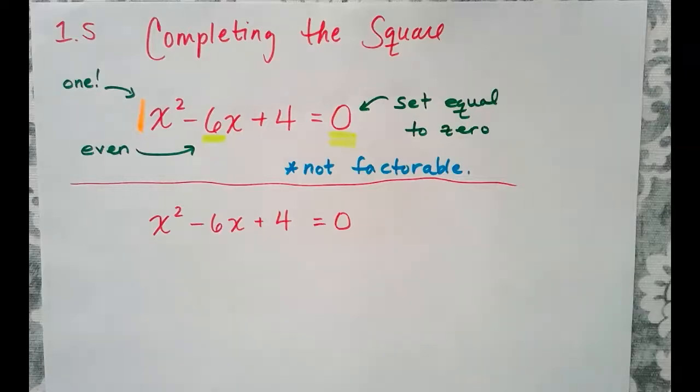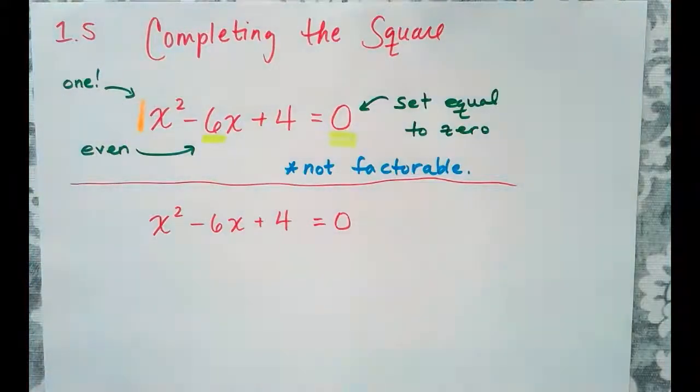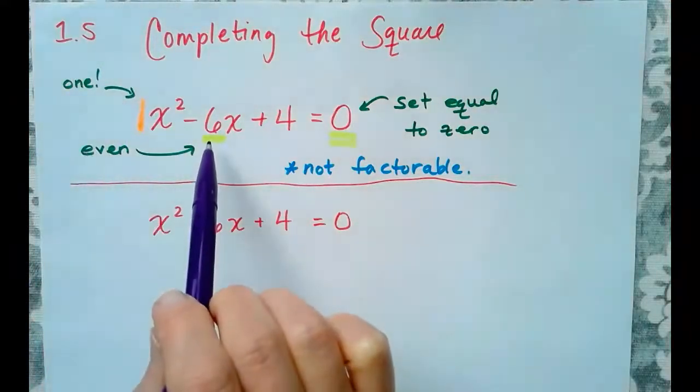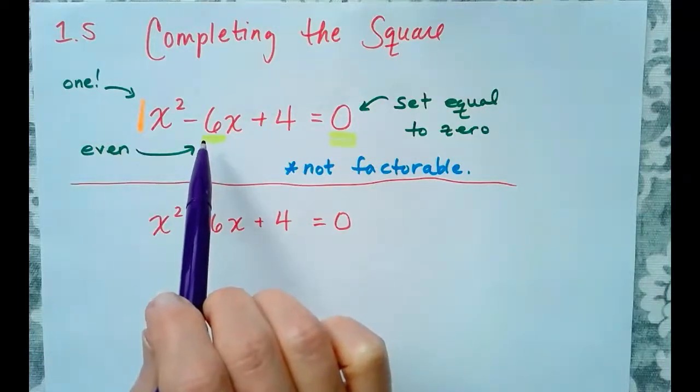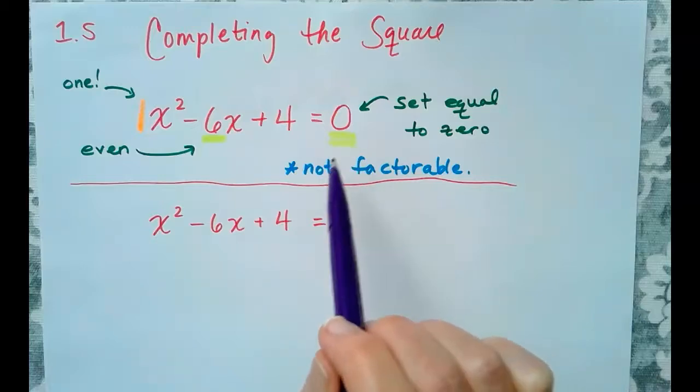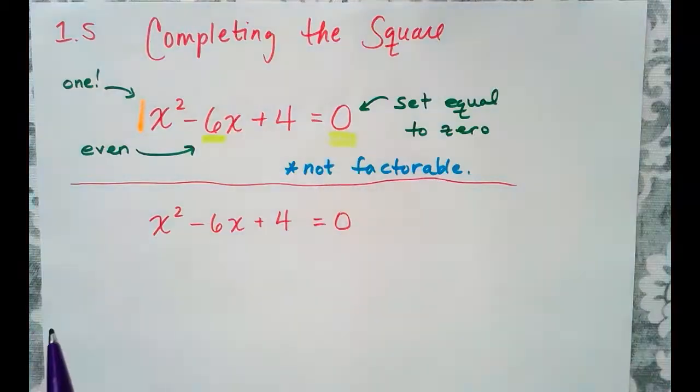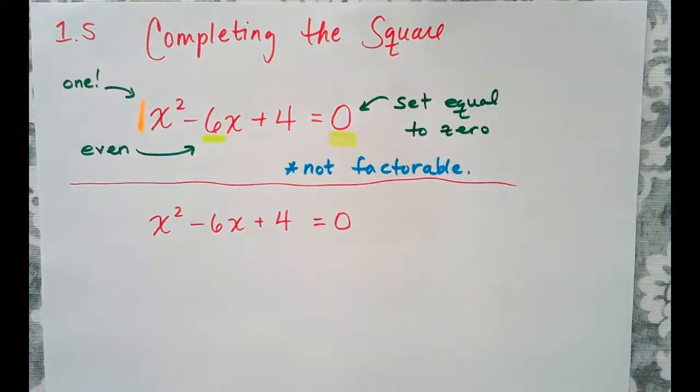So when is it the best option? Well, it's the best option if there is a 1 as the leading coefficient. The linear term, or the middle term here, is an even number. And we also want our quadratic equation to be not factorable. So this x² - 6x + 4 = 0 is a very good candidate for completing the square.